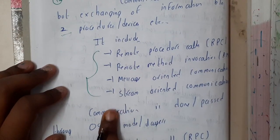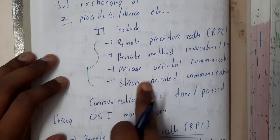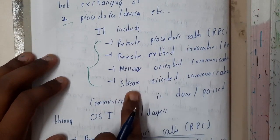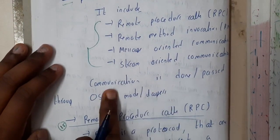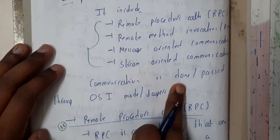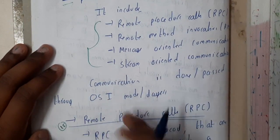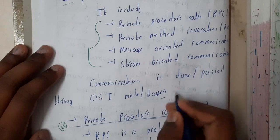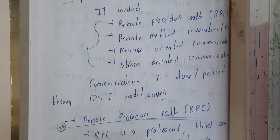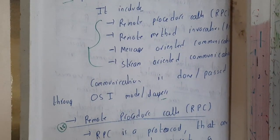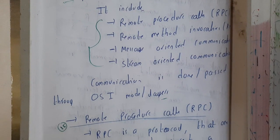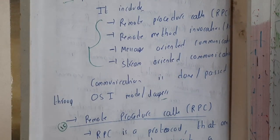The third one is Message-Oriented Communication, and the fourth one is Stream-Oriented Communication. Communication is done or passed through the OSI layer, so before going into distributed systems, please make sure that you are clear with OSI.